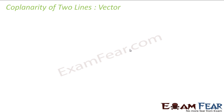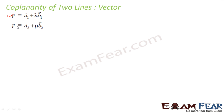Let's learn a new topic called coplanarity of two lines. So if I have two lines, R1 equal to A1 plus lambda B1, and R2 equal to A2 plus mu B2, these two lines are coplanar if (A1 minus A2) dot (B1 cross B2) is equal to 0. I can show you how.